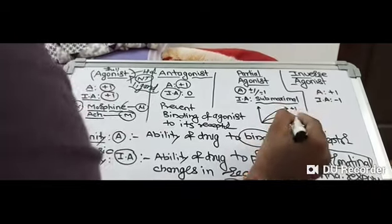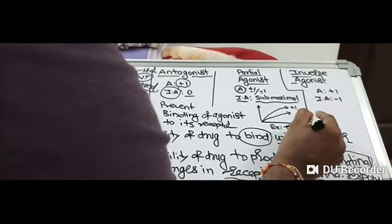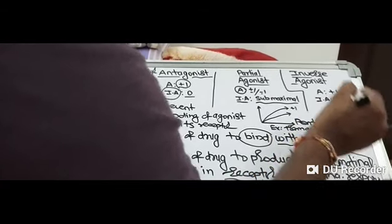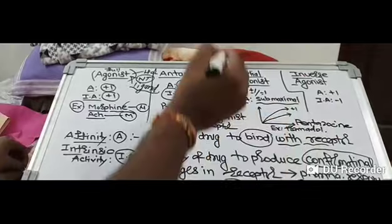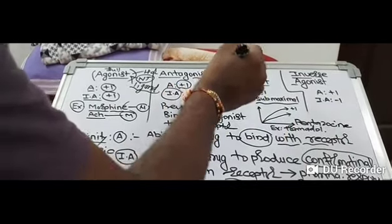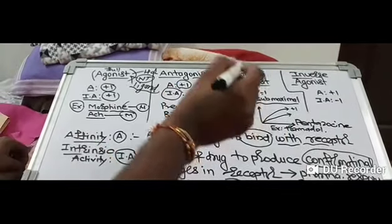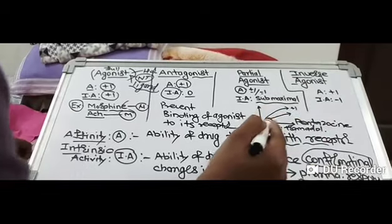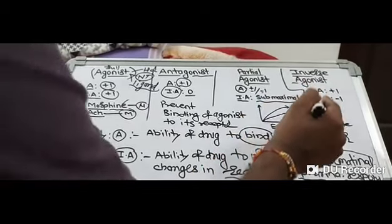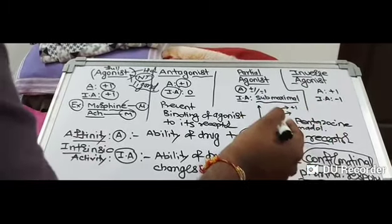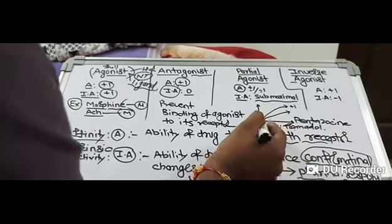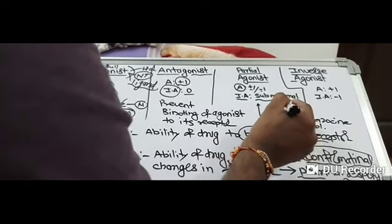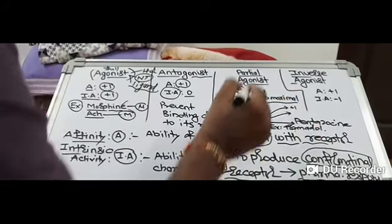Examples of partial agonists include tramadol and pentazocine. The clinical significance of partial agonists like tramadol or pentazocine is that they are safer drugs, because whatever the concentration, they will only produce a submaximal response due to their submaximal intrinsic activity.